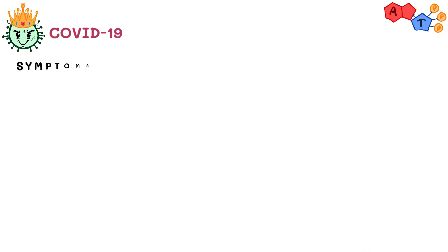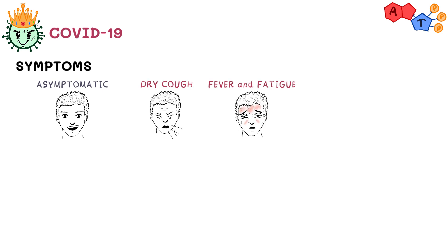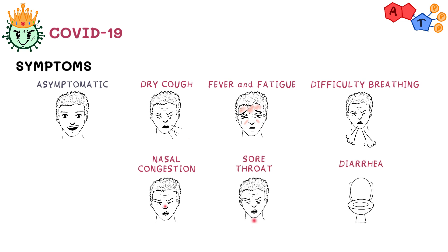COVID-19 symptoms may vary. Some people may have the virus and be completely asymptomatic, while others might have mild upper respiratory tract infection symptoms similar to any flu, such as dry cough, fever, fatigue, aches and pains, and difficulty breathing. Less commonly, patients can also present with nasal congestion, runny nose, sore throat, and even diarrhea. The good news is this makes up around 80% of people who have COVID-19.